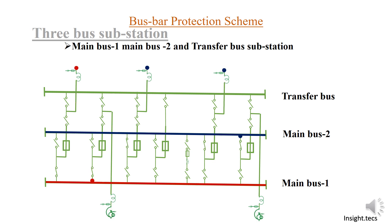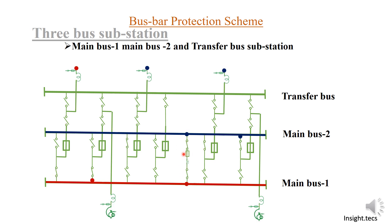The function of the bus coupler is that when it is on, power flow can occur from Bus 1 to Bus 2 and from Bus 2 to Bus 1. Generally, based on the requirement of the grid, the bus coupler is either turned on or turned off.